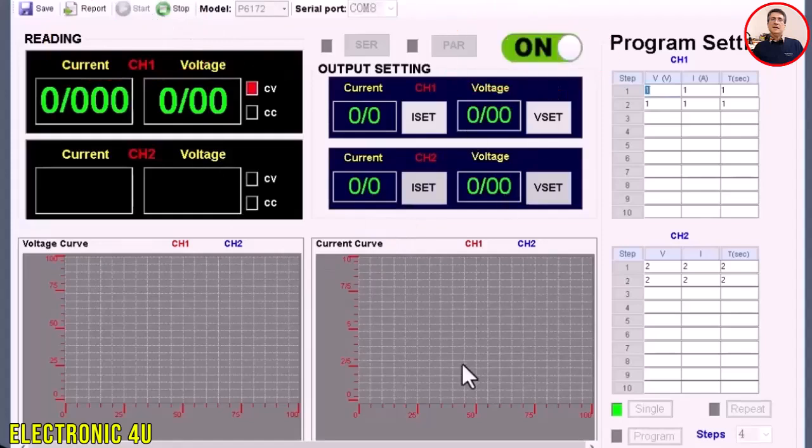If everything is correct, this button will turn green. Now the voltage and current values shown on the power supply display should also appear live in the software. If we change the voltage on the power supply, the values in the software also change.